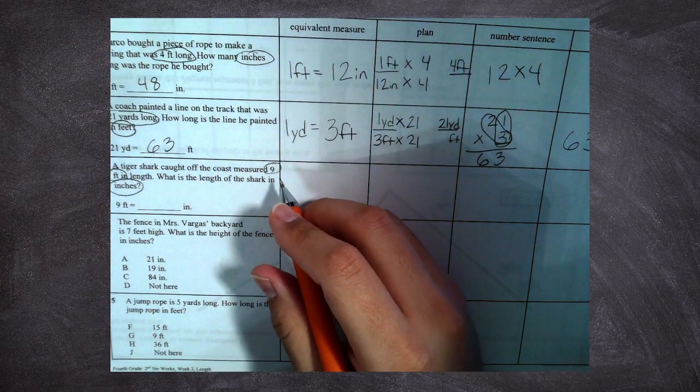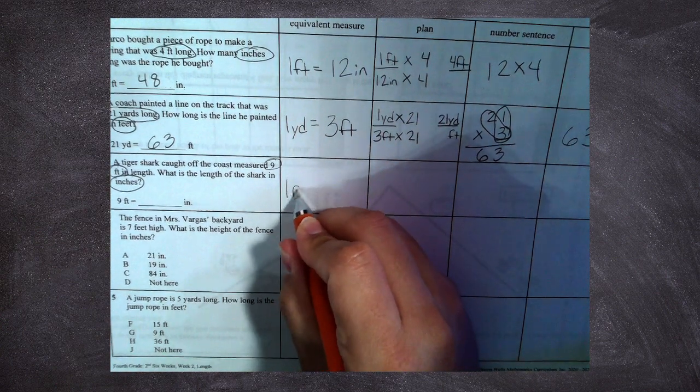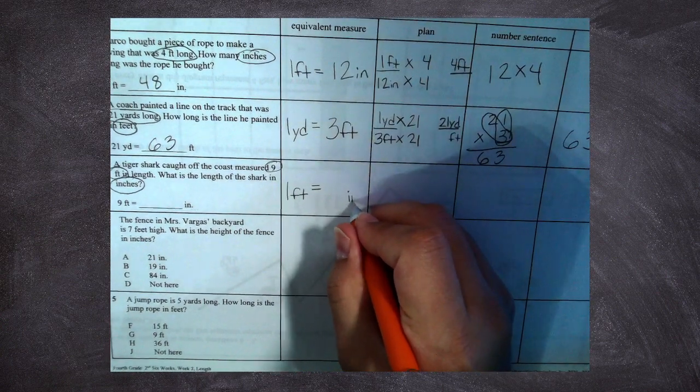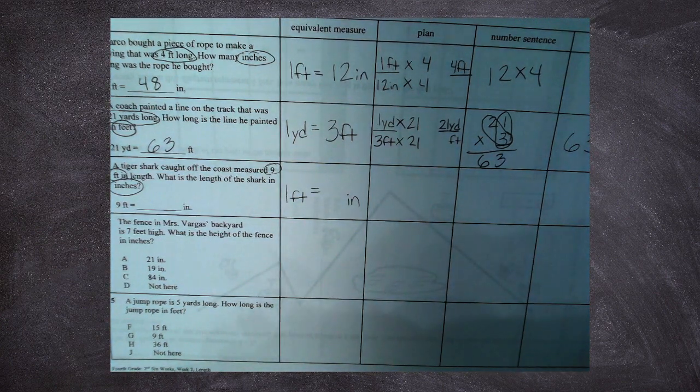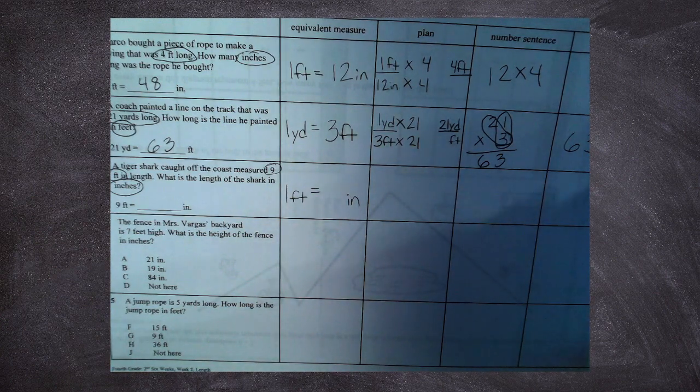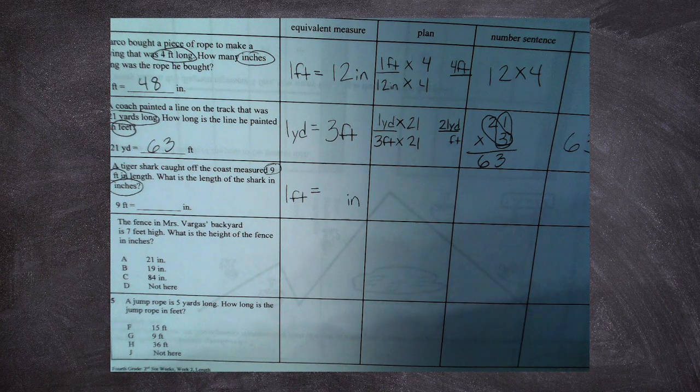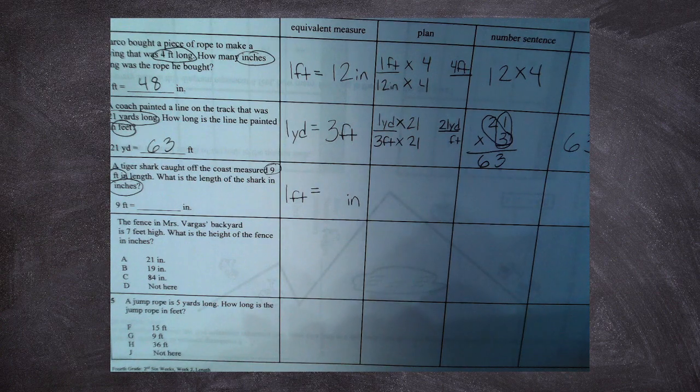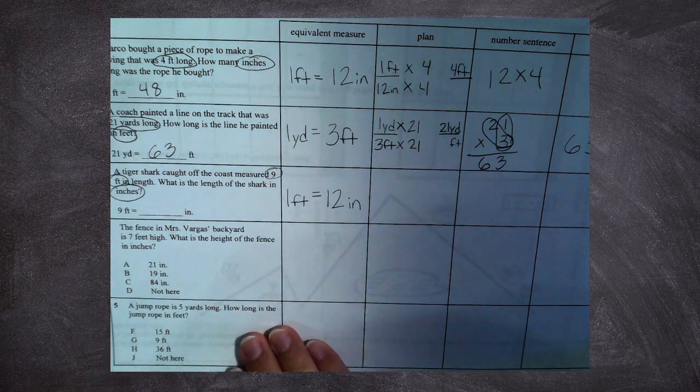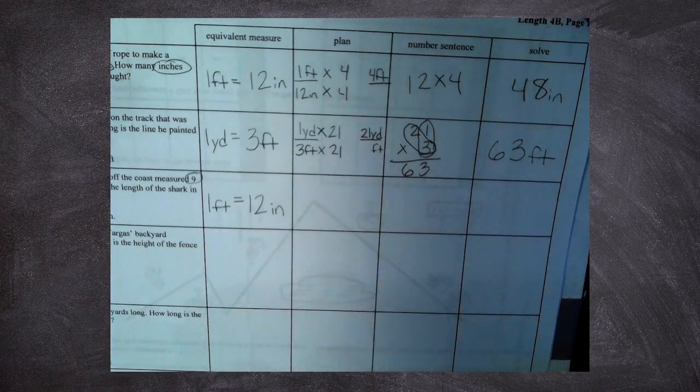My equivalent measure, the fact about feet and inches I need to start off with that. One foot equals how many inches? How many inches are equal to one foot? Who can tell me, either by looking at our work that we did before or by looking at that conversion chart? What should it be, Alexa? Twelve inches. One foot is equal to 12 inches. Okay, so I know that that's a fact, one foot is equal to 12 inches.